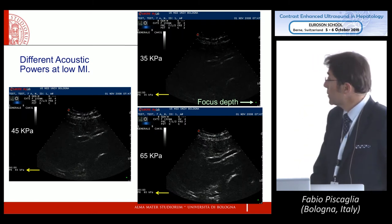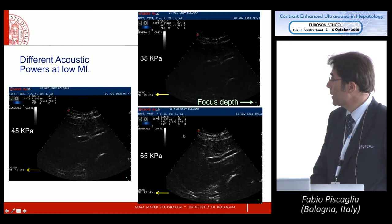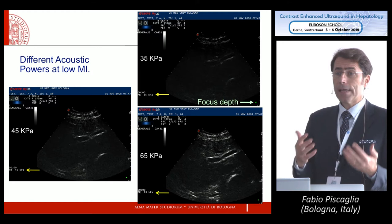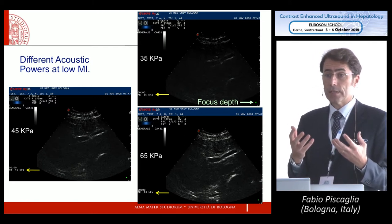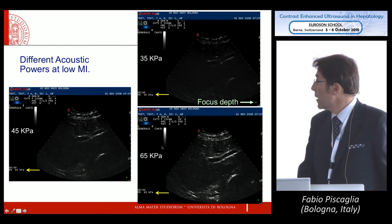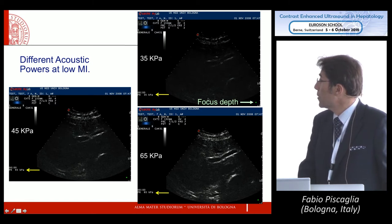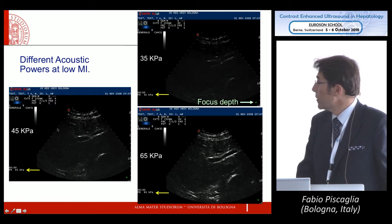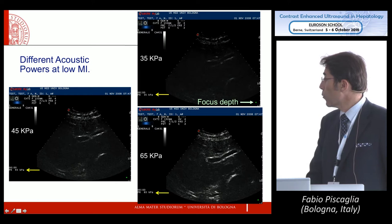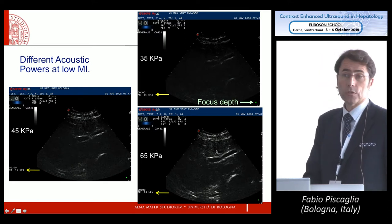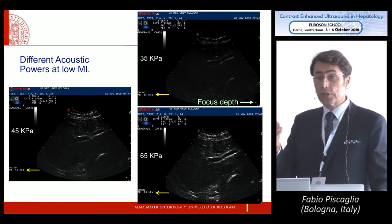The acoustic energy does not only impact the persistence of micro-bubbles — higher energy output also produces stronger reflective signals from stationary structures. Here you can see the same case investigated at 35 kPa: you barely see strong reflecting echoes from the diaphragm and main vessel walls. At slightly higher energy the structures are much better seen, and at 65 kPa you clearly depict the vessel walls. This matters because once you inject micro-bubbles, you can no longer distinguish perfusion from tissue signals — which is why it is very important not to change settings while scanning.